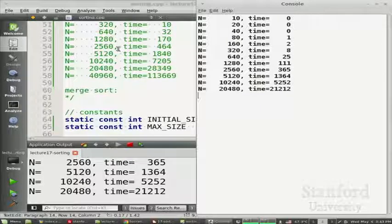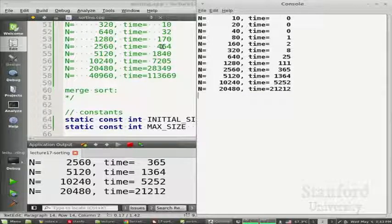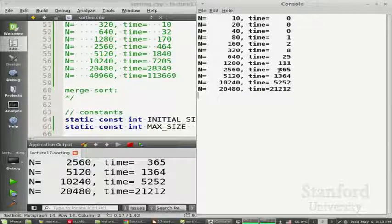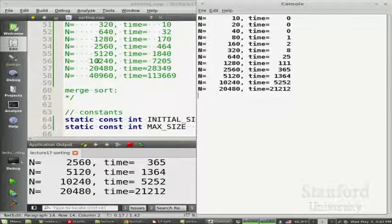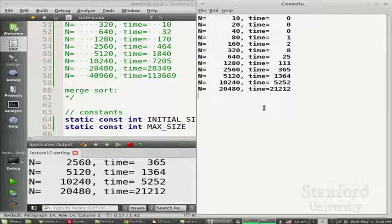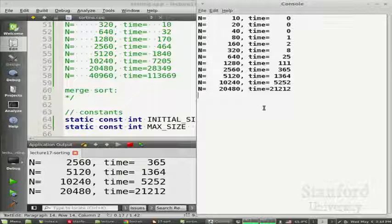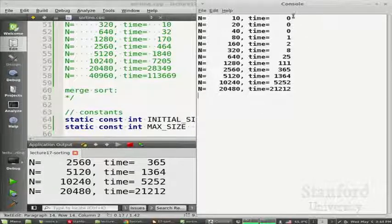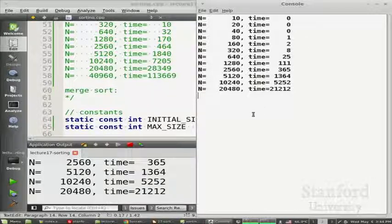Here were the runtimes for selection sort. So selection sort to do 2560 took that long, and this one took about like a third or fourth less than that. 10240 on this one took seven seconds, and this one took five seconds. It's a little faster, right? It's not like twice as fast or 10 times as fast, but it's a little bit faster. Still has the N squared growth. So that's important to notice.